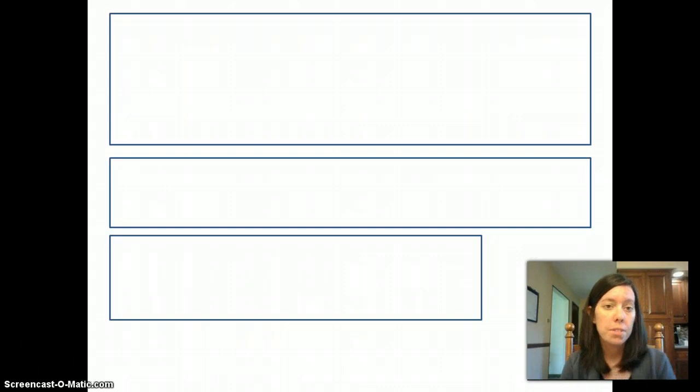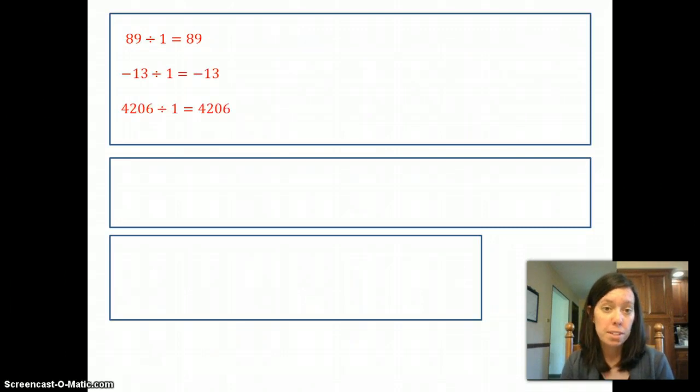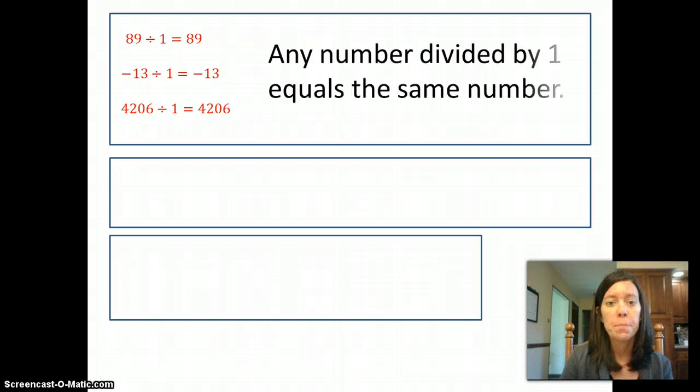Let's look at a couple of examples here that don't involve fractions. We know that 89 divided by 1 is 89. Negative 13 divided by 1 is negative 13. 4206 divided by 1 is 4206. So what rule am I trying to show you here? Any number divided by 1 equals the same number.